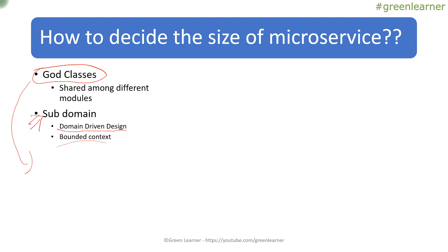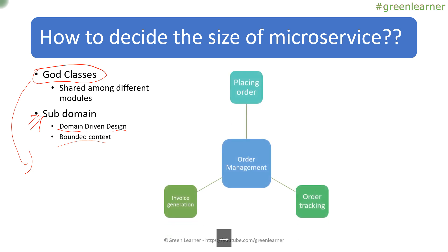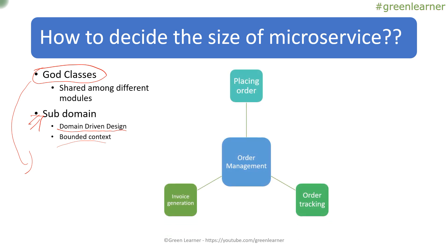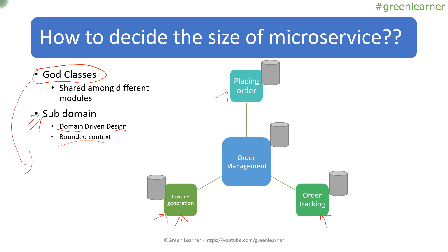Let's see this with an example. We have an order management service. Under order management, we can have different functionalities: one part takes care of placing the order, another handles invoice generation about the order, and once the order is placed, users track those orders. These are different sub-domains — related to order but altogether different. When requesting an order, it has nothing to do with invoice generation, and vice versa. So we can separate them into different services, each with a different database.